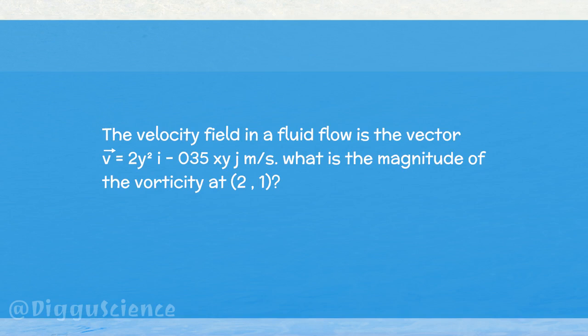The velocity field in a fluid flow is the vector v equal to 2y squared i hat minus 0.35 xy j hat meters per second. The question is, what is the magnitude of the vorticity at (2,1)?